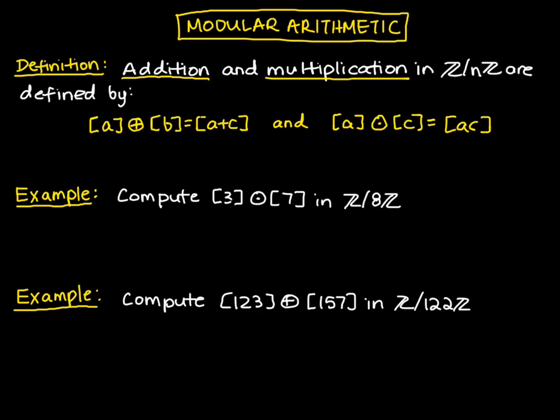From above, we know that [3] times [7], and when I say 3 and 7, I mean the congruence class of 3 and the congruence class of 7, is going to be equal to the congruence class of 3 times 7, which is equal to the congruence class of 21. And if we're considering elements in Z mod 8Z, that's just going to be equal to 5.